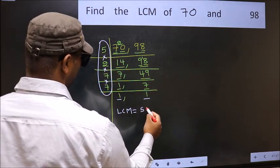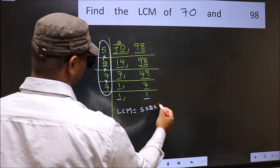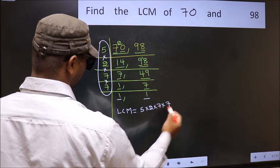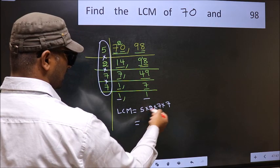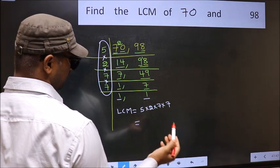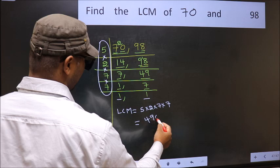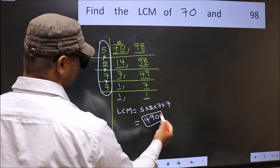That is 5 into 2 into 7 into 7. When we multiply these numbers, we get 490 as our LCM.